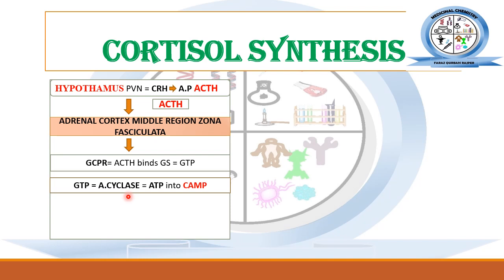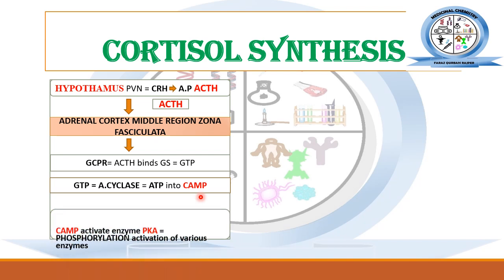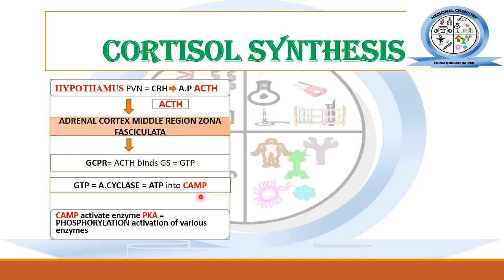This binding initiates GTP stimulation. After that, adenylyl cyclase is activated, causing the conversion of ATP into cyclic AMP (cAMP). This cAMP then activates protein kinase enzymes, which are responsible for the phosphorylation and activation of different enzymes normally occurring in the cortisol synthesis pathway.